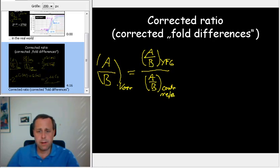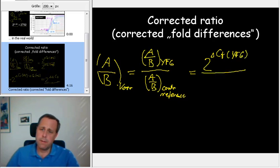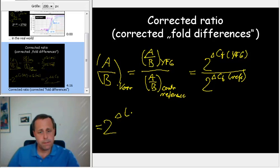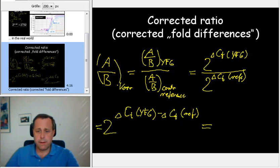And that equals 2 to the power of delta CT for your favorite gene divided by 2 to the power of delta CT for your reference. This again is delta CT for your favorite gene minus delta CT for your reference gene, and this in short is something that we designate as 2 to the power of delta delta CT.